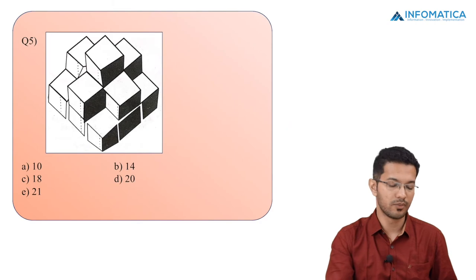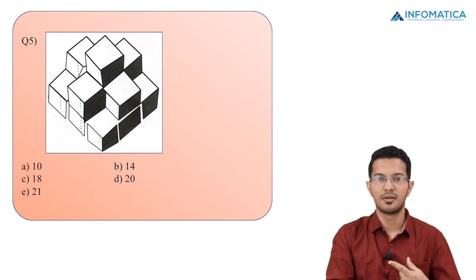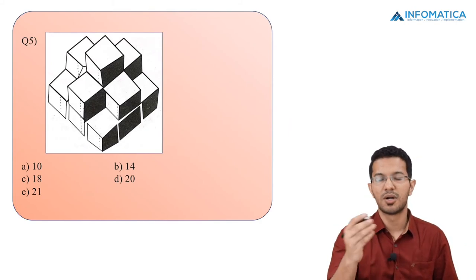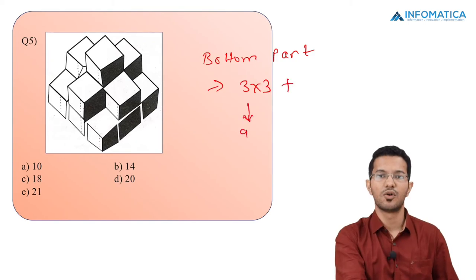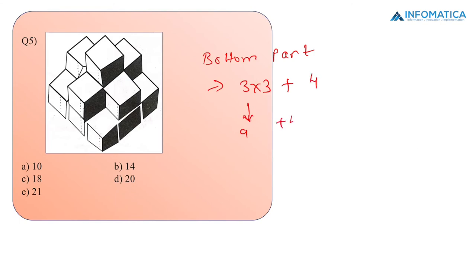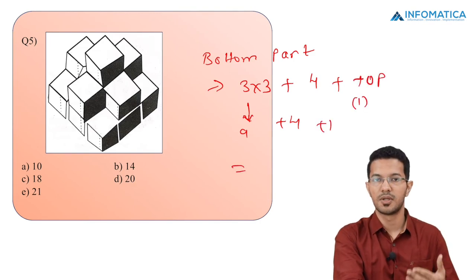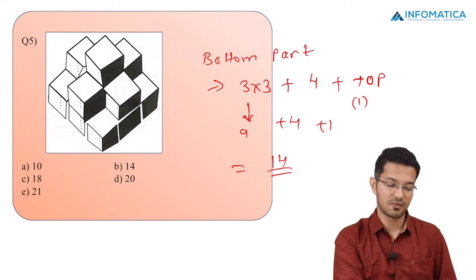Now let us go for the last MCQ. In this again we have been given a stepped structure. We have total 3 rows and 3 columns in the bottom base, so 3 multiplied by 3 gives 9 cubes for the bottom part. For the second step, we have 4 cubes, and the top part is 1 cube. So adding 9 plus 4 plus 1 gives 13 plus 1 which is 14 cubes. The answer is option B, which is 14.